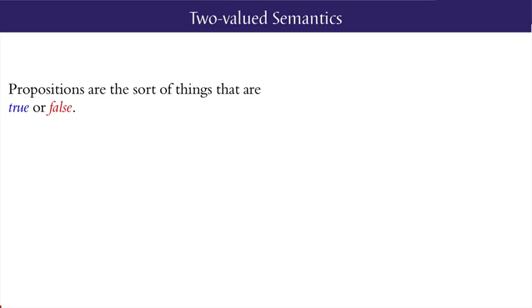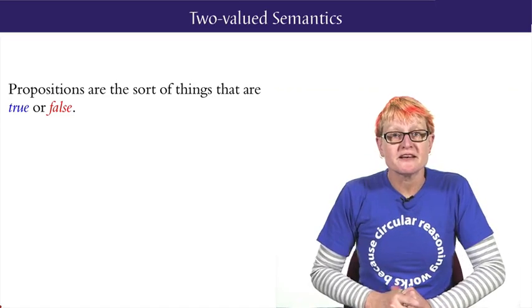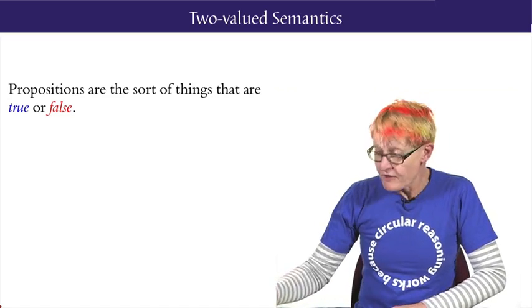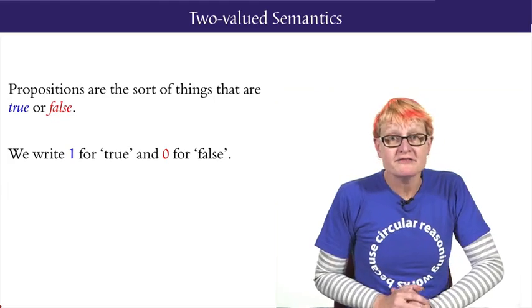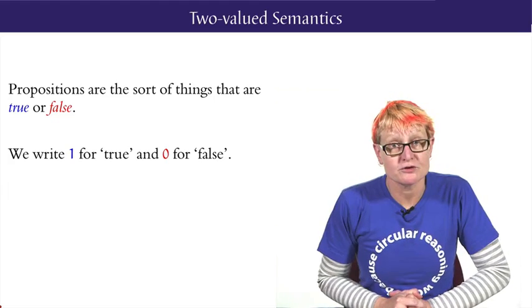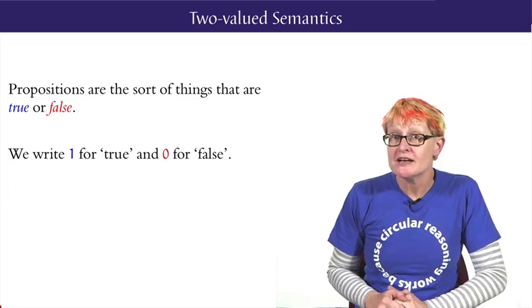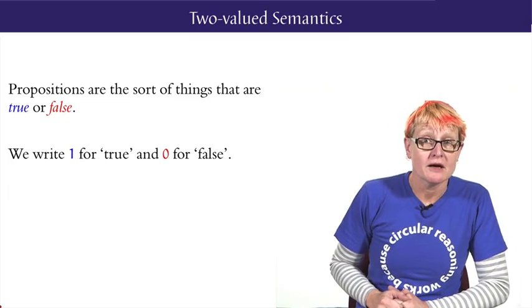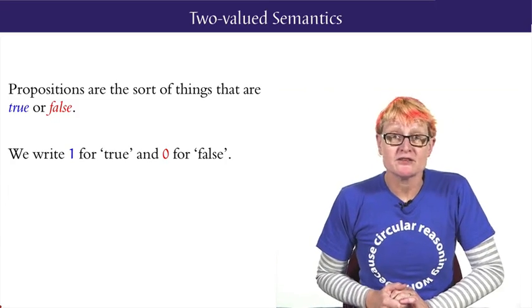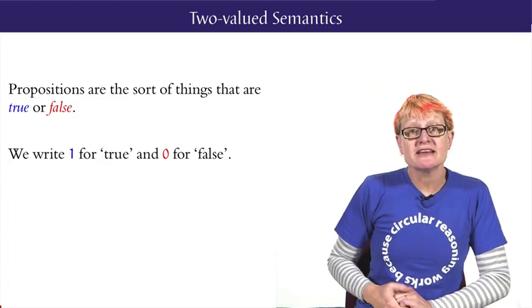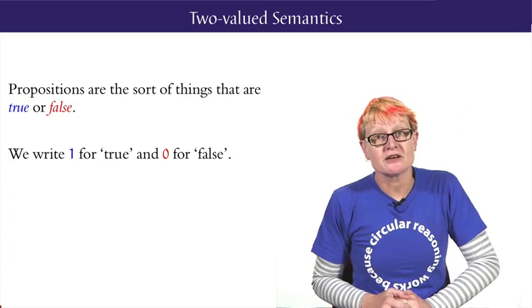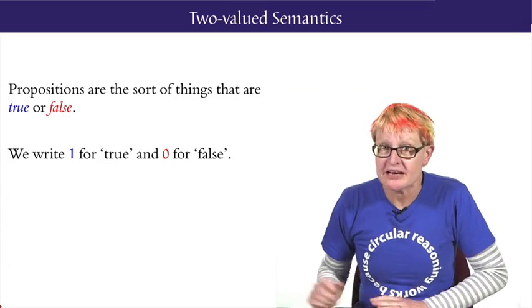Okay, so propositions are the sort of things that are either true or false. We'll write 1 for true and 0 for false. Any two distinct symbols would in fact do. T and F are quite common. We'll use 0 and 1 because they are common and because they are also standardly used in digital electronics, one of our application areas.